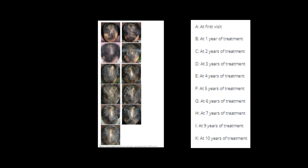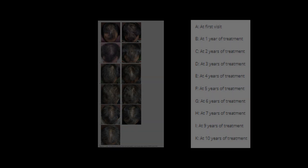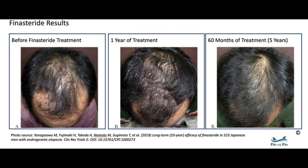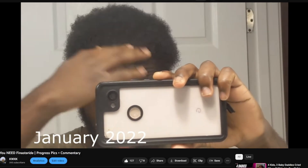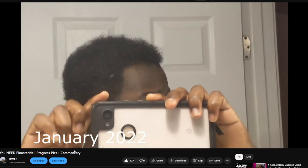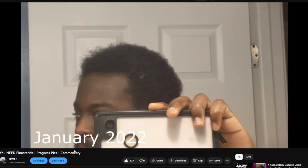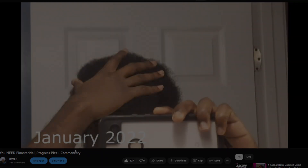When the 5-alpha reductase type 2 enzyme is blocked in the hair follicles, it leads to the reduction of DHT in the scalp. And this, in many cases, halts hair loss, slows it down, and in some individuals they get substantial regrowth and maintenance over time. Studies have shown that finasteride treatment can increase the number of hairs in the anagen phase and improve the anagen-to-telogen ratio, leading to peak efficacy at one or two years of treatment. Basically, it increases the number of hairs that are growing relative to the number of hairs that are falling out.